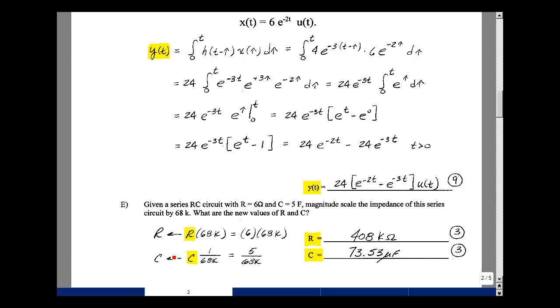magnitude scaling multiplies every impedance by a scale factor, in this case 68,000. We're going to replace our resistor of 6 ohms by 6 times 68,000, and that's 408k. The capacitor, though, because its impedance is 1 over sC, we're effectively dividing the capacitance by the magnitude scale factor. We're taking our 5-Farad capacitor and dividing it by 68,000, and that gives me 73.53 microfarads. This problem is worth 25 points, and the partial credit for each of the answers is listed.